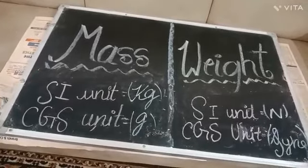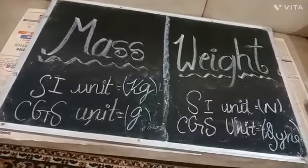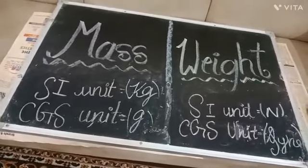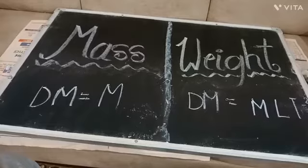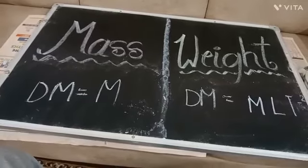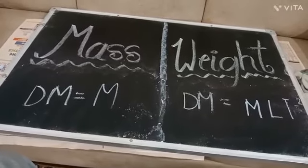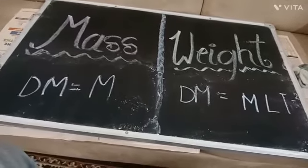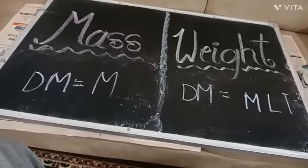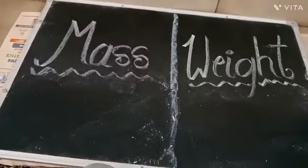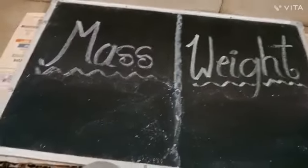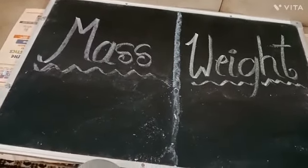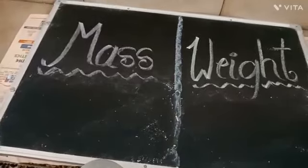The SI unit of mass is kilograms and the CGS unit of mass is grams, while the SI unit of weight is Newton and the CGS unit of weight is dyne. The dimensional formula of mass is M, and the dimensional formula of weight is MLT⁻².